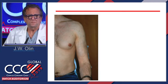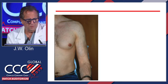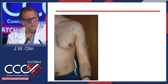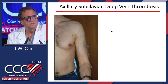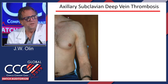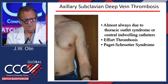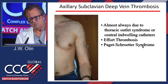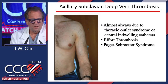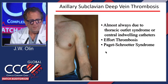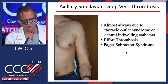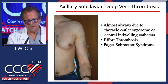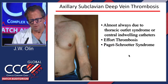Paget-Schroetter — the correct terminology is axillary subclavian venous thrombosis. In a young, healthy person, the most common cause is thoracic outlet syndrome, also called effort-related thrombosis. This occurs in young, healthy people, usually in their dominant arm. In the outpatient setting it's almost always due to thoracic outlet syndrome; in the inpatient setting it's due to pacemakers or central indwelling catheters.